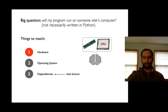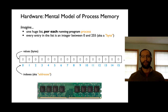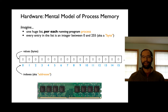Starting with hardware, there are two types we really have to understand: RAM or memory, and the CPU. For RAM, the mental model I want you to have is that each running program on your computer has one giant list, and anything to do with that program has to be inside that list. A running program is called a process — it's possible to open two terminals and run the same program in both, giving you two processes. Each process has this giant list, and inside it are values called bytes. A byte is just an integer between 0 and 255.